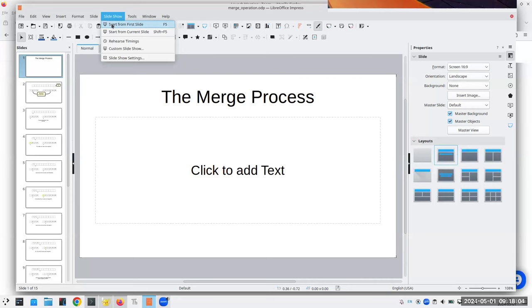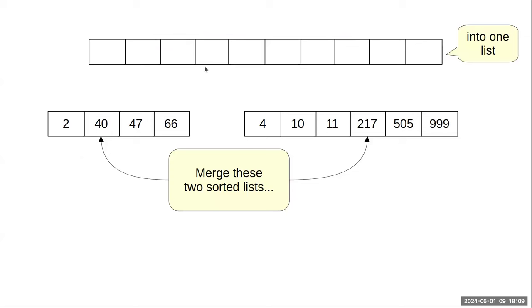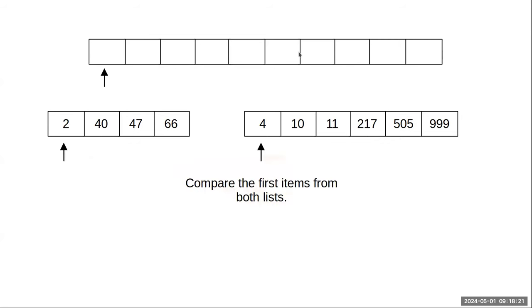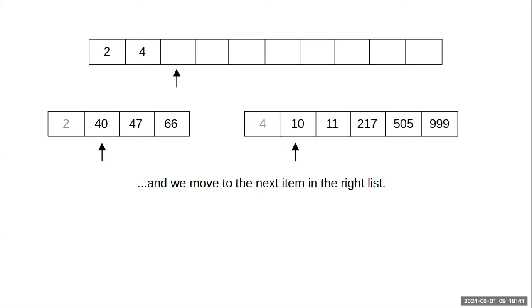So in general, how do we merge two lists? We have two lists that are already sorted, and we want to combine them into one list. A straightforward way is to compare the first items from both lists. Which one is less? Two is less than four, so the smaller one moves to the merged list, and then we move to the next item in that list. Four versus 40 — four is smaller, so it moves into the merged list.